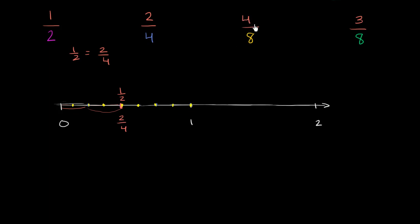And now we're going to go four of them. Starting at 0, we're going to go 1, 2, 3, 4. So we end up at the same place again. This is also equal to 4 eighths. So 1 half is equal to 2 fourths, which is equal to 4 eighths.